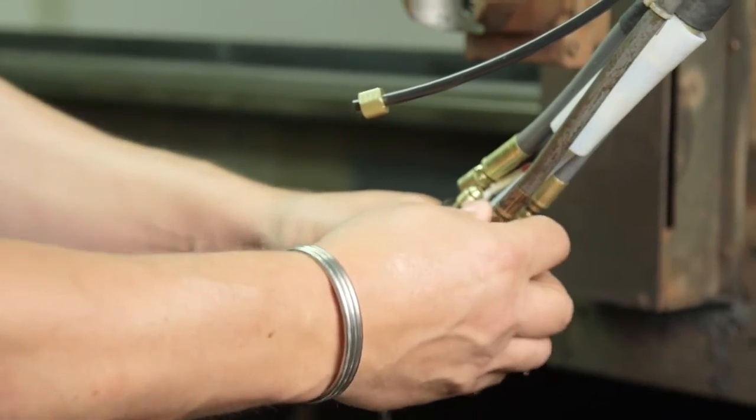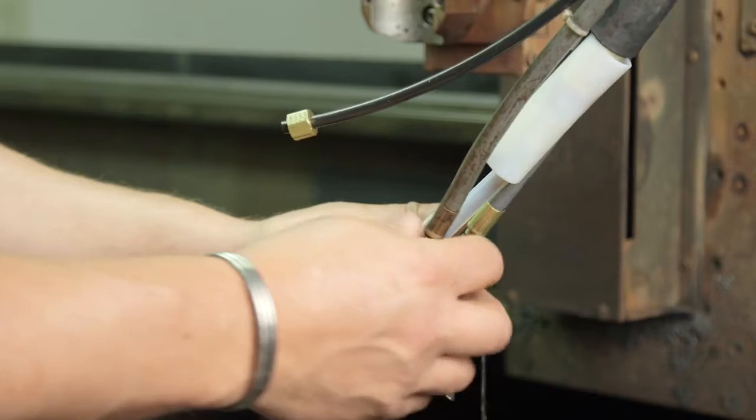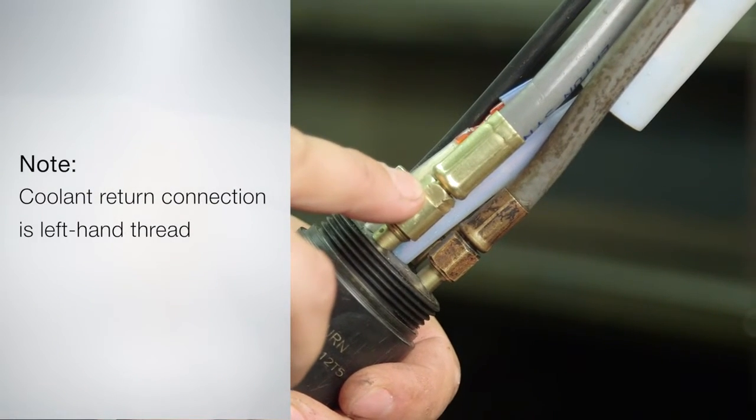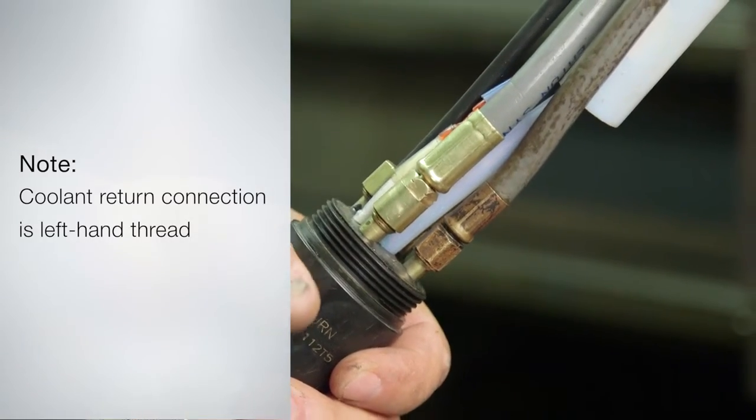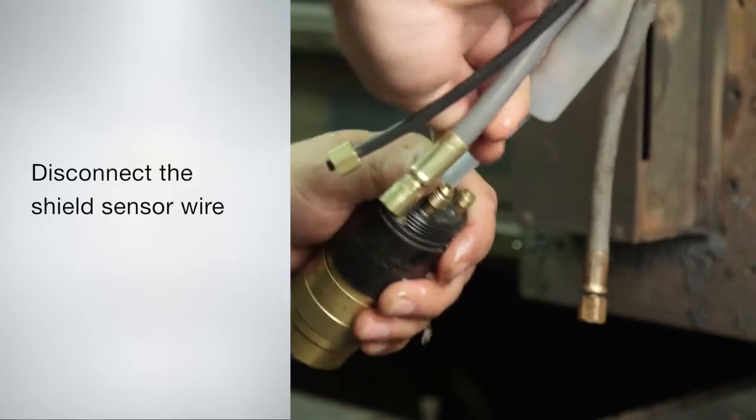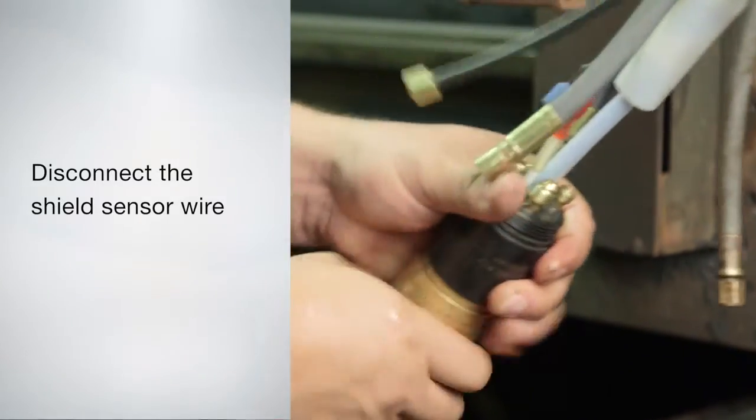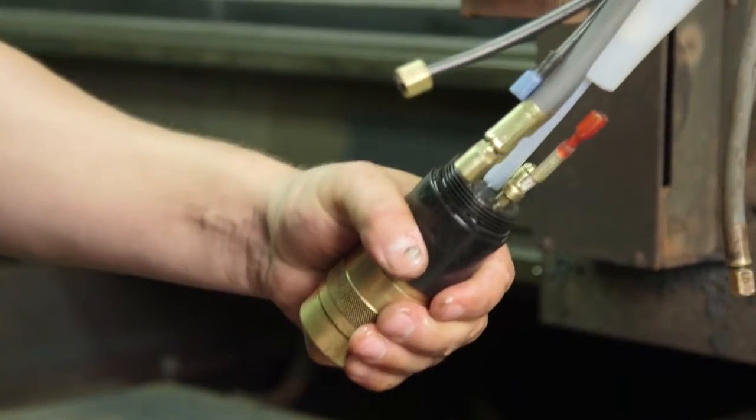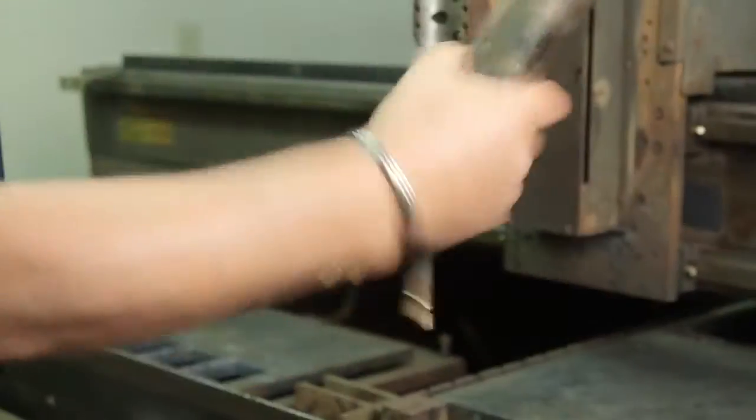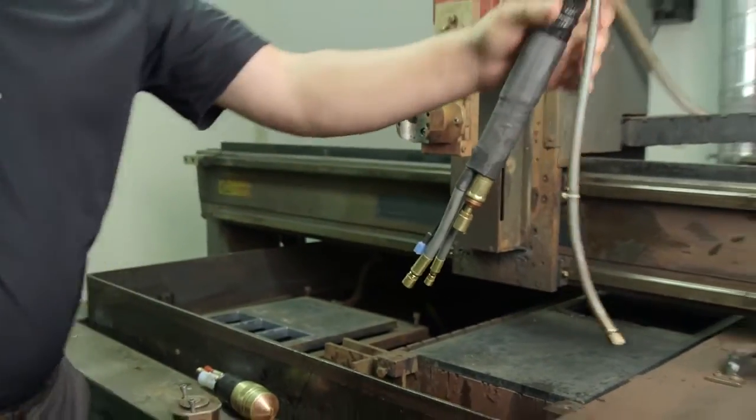All connections are standard right-hand thread except the coolant return connections, the one with the long hose, which is a left-hand thread as indicated by the notches on the fitting. Disconnect the shield sensor wire by grasping the plastic shells over the connectors and pull them apart. Remove the torch assembly and set aside. Remove the plasma gas hose and set aside.